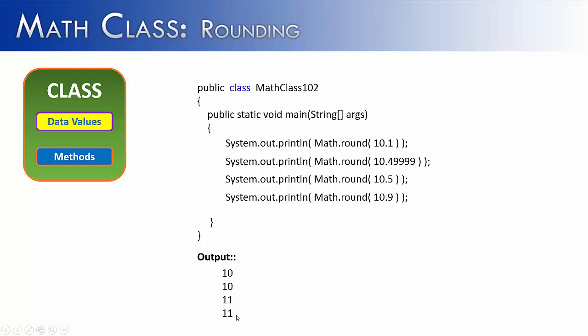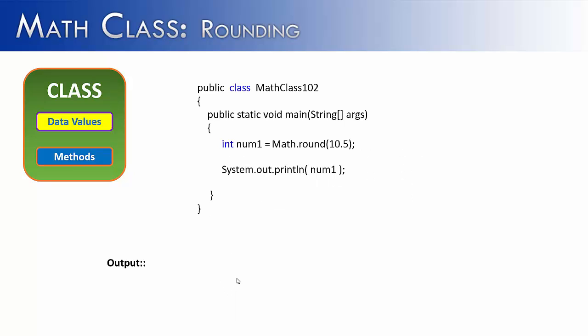So unlike the two other rounding methods of the Math class, floor and ceil, Math.round does not return a double. So if we were going to do something like this, Math.round(10.5), and we were going to store it into an integer, you would think that it would work. But if we were to run this program right now, we would actually get an error.